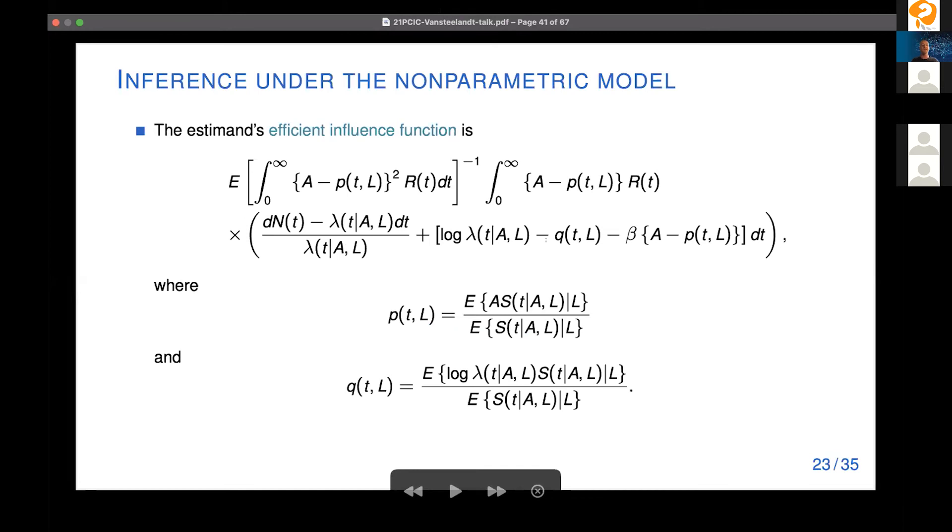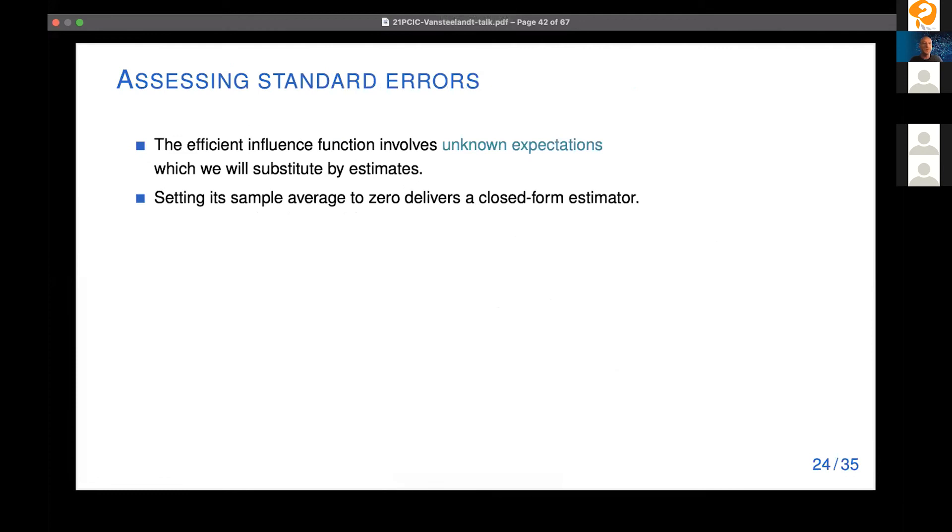And that's basically how the estimation strategy works. We're going to calculate the efficient influence function and define the estimator for beta as the value that sets the sample average of those efficient influence functions to zero. So that's also the principle behind debiased learning or targeted learning. This is for the estimate that we consider how the efficient influence function looks like. And so in practice, we take the sample average of these contributions across all people in the study and then solve it for beta, the beta that appears here. So it's a linear equation, very easy to solve. It leads to a closed form estimator once we can substitute all of the unknowns by estimators. And so one unknown is P here. It's like a weighted average of the exposure in covariate strata weighted by the survivor function. The Q similar, it's a weighted average of log hazards. And finally there is the hazards itself appears over here. So all of these will need to be substituted by estimates that potentially we will obtain through machine learning.